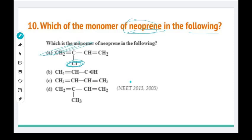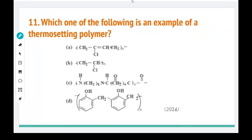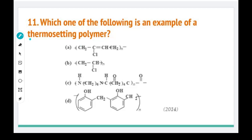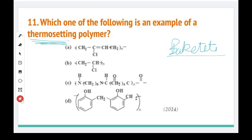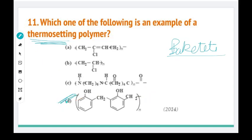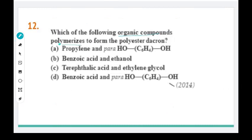Option A is the right answer for this question — from 2013 and also 2003. Next: which one of the following is an example of a thermosetting polymer? The right answer is selected from the thermosetting polymer options — this is the 2014 question. Next: which of the following organic compounds polymerizes to form polyester dacron? The monomers for dacron are ethylene glycol and terephthalic acid — that is the right answer. This is also 2014.